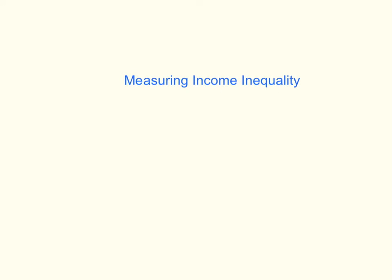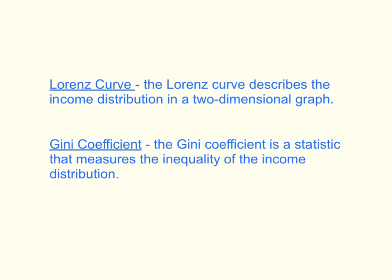In this video I'll be discussing how economists and other social scientists measure the amount of income inequality in an economy. Specifically, we're going to be looking at two tools: the Lorenz curve and the Gini coefficient. The Lorenz curve is a graph, and the Gini coefficient is a statistic — a number — that also measures the degree of inequality in the economy.